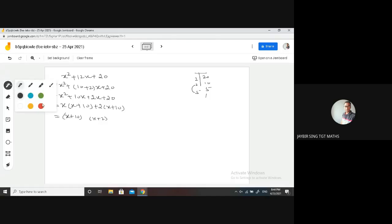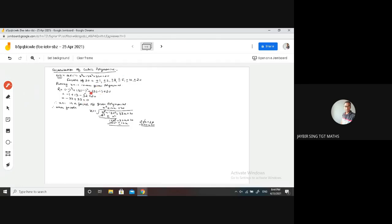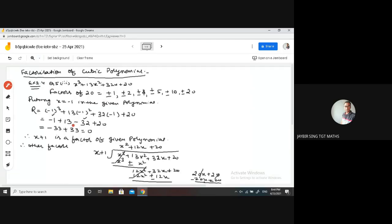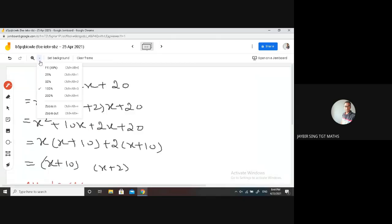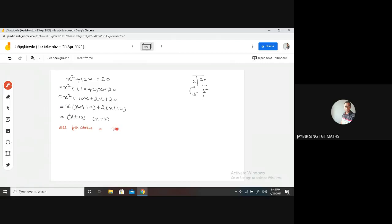So you can write all factors are x plus 1, x plus 10 and x plus 2. So you can see the sequence of x plus 2 and x plus 10. This way you can solve all the polynomials. Question number 5 of the rest of the parts will try to do this.